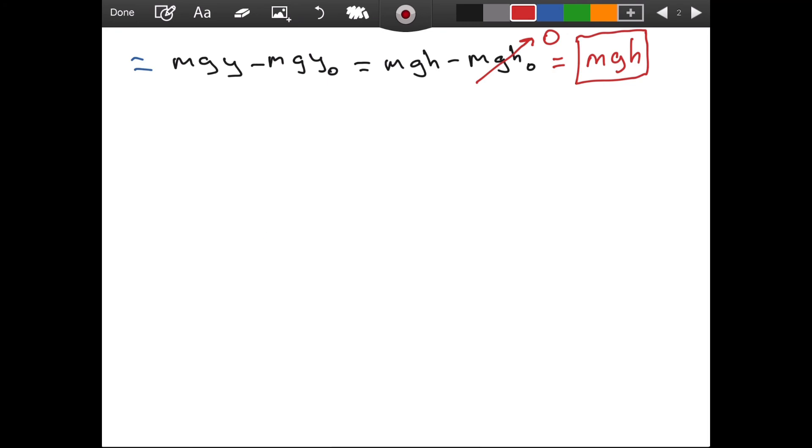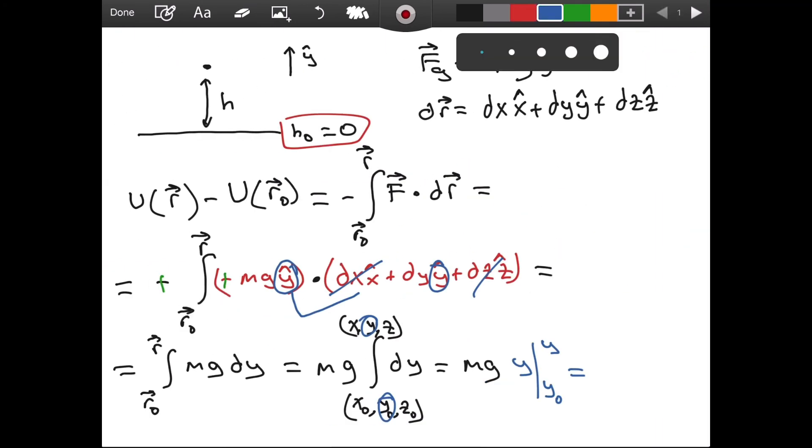However, if we were to have a satellite here orbiting the earth and it is at a height h, then you can no longer use this. Because why is that? I mean, think about this. Why can't we use this as the formula for our gravitational potential energy? We can't use it because this step is not correct. This step is no more correct in that case.